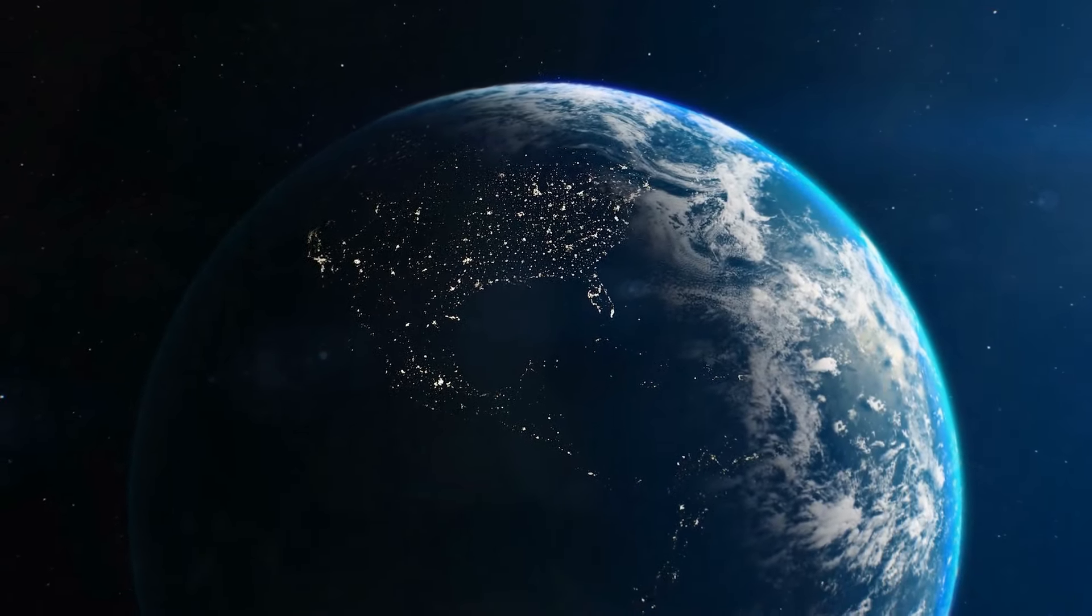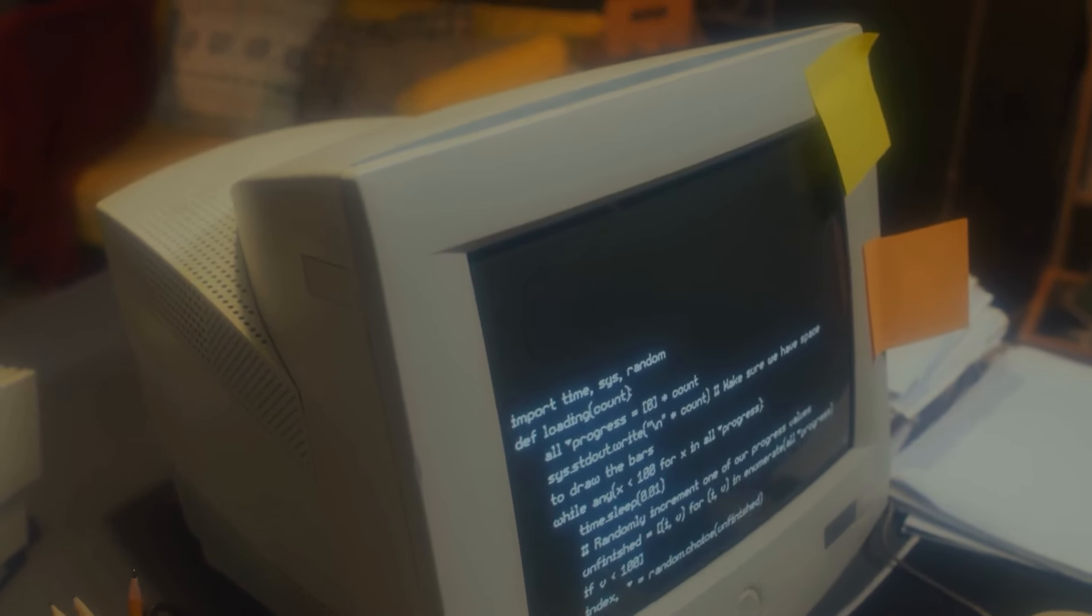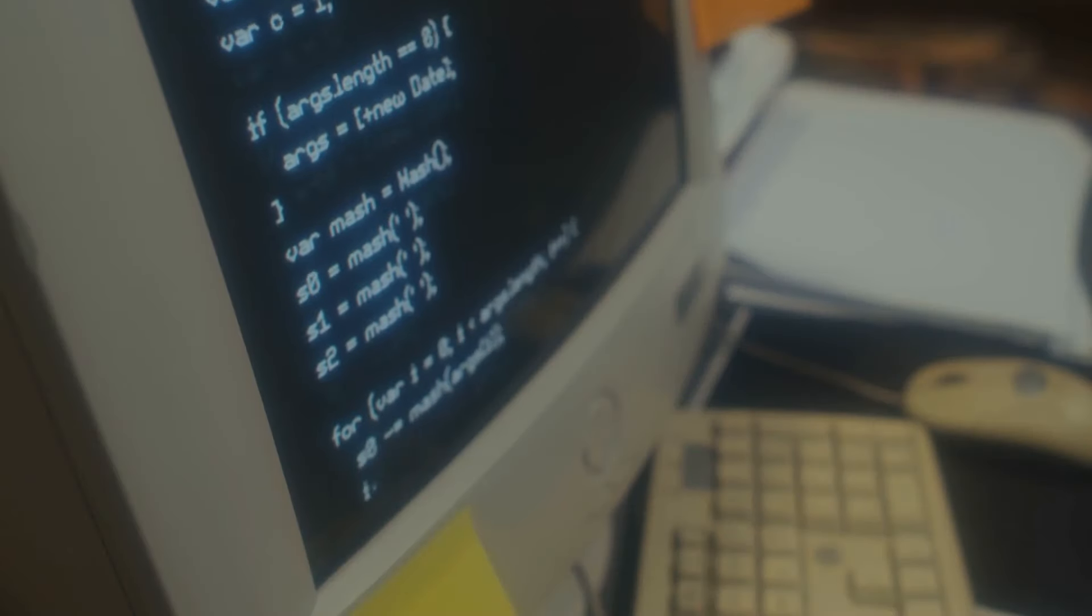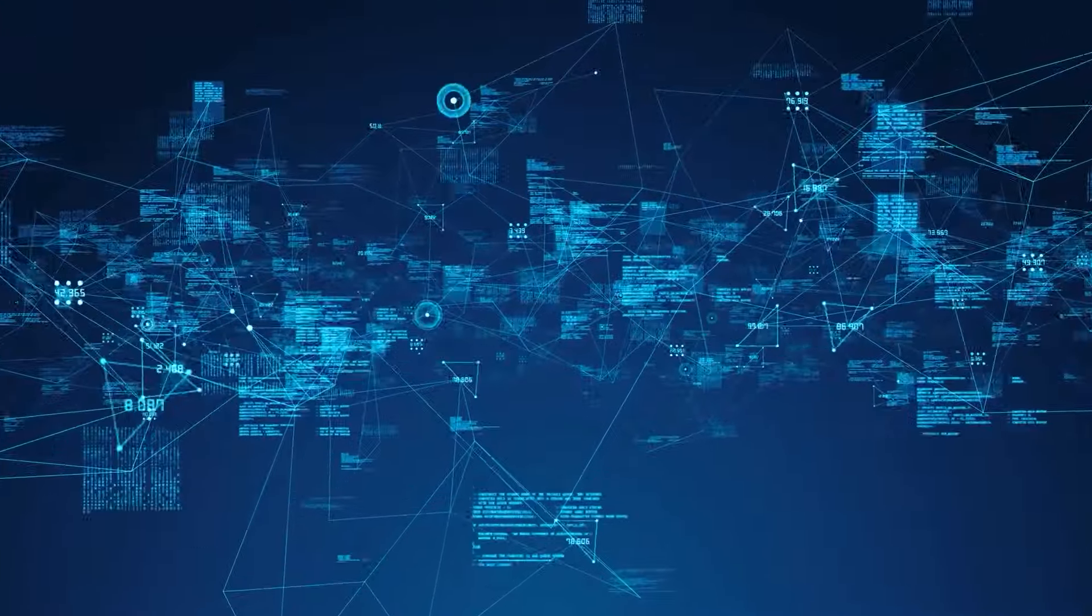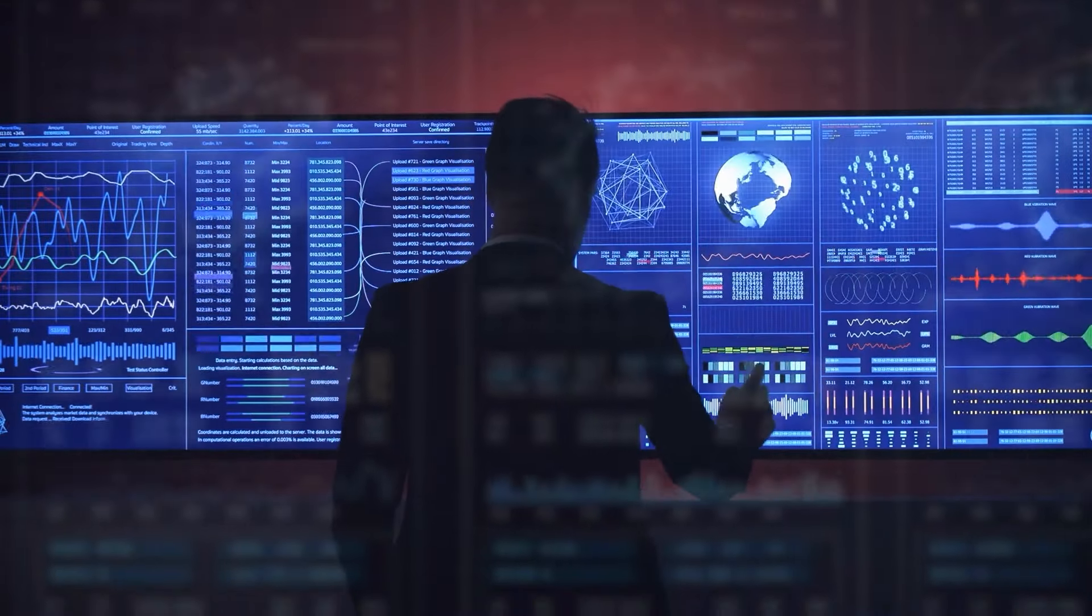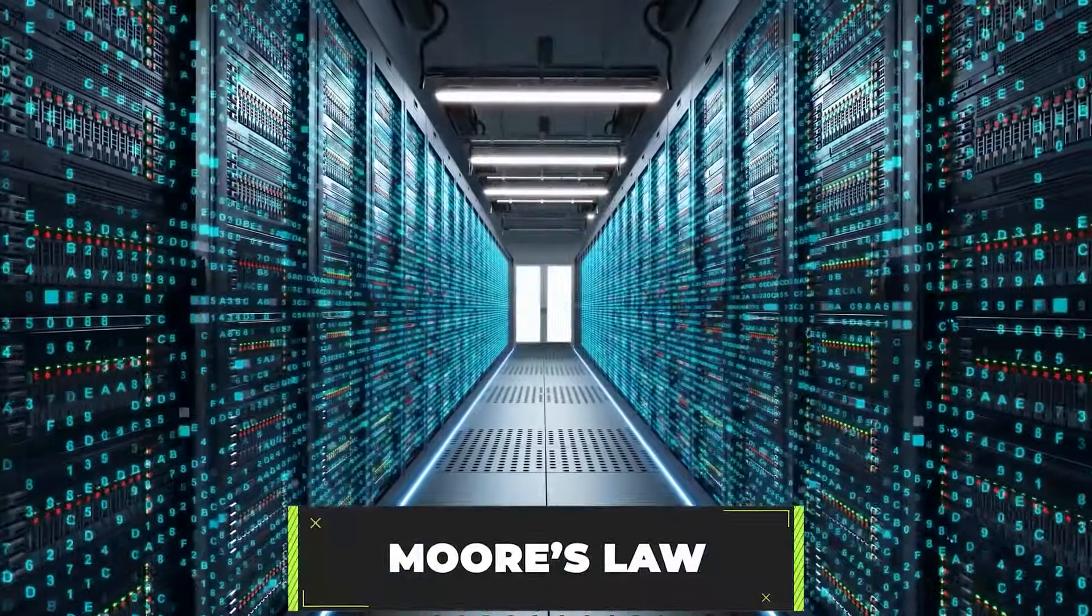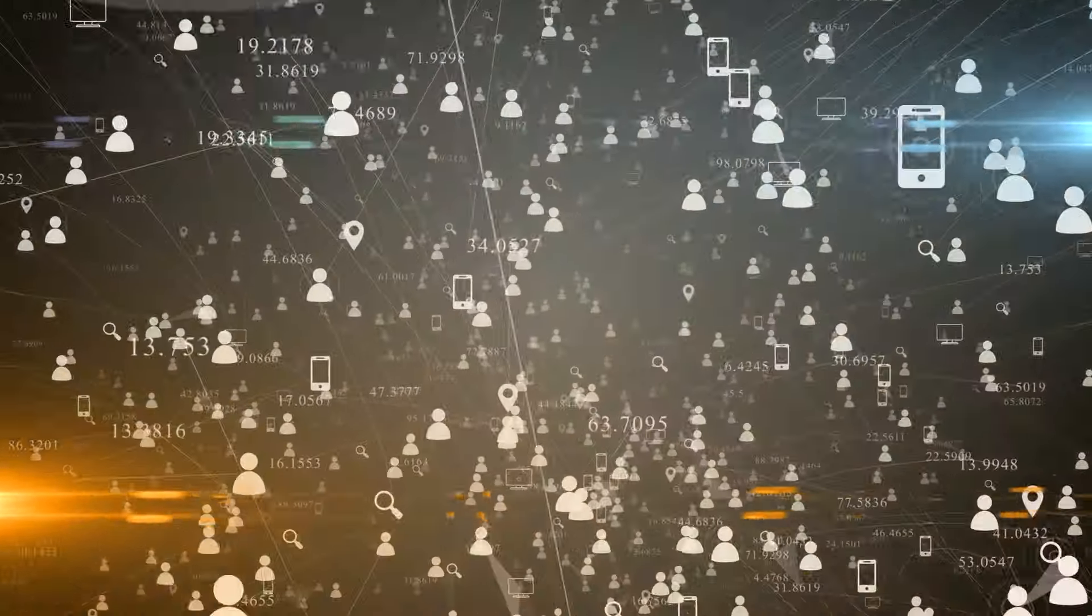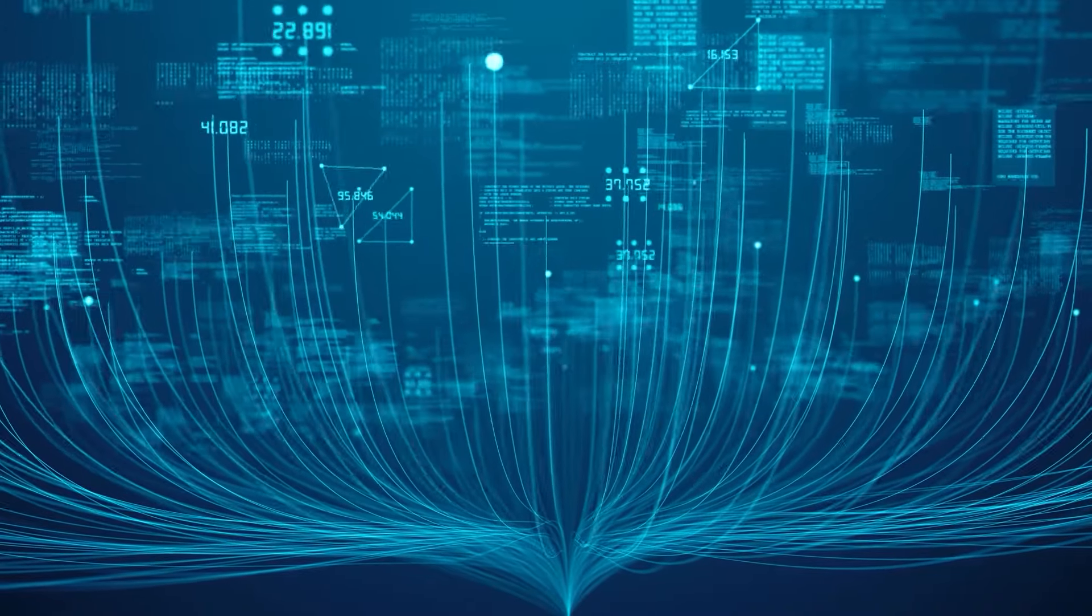The fourth epoch is defined by the invention of technology, particularly computers and information processing systems. The creation of mechanical calculators, early computers, and eventually digital technology revolutionized our ability to store, process, and analyze vast amounts of information. This epoch saw the birth of the digital age, where exponential growth in computing power as described by Moore's Law began to take hold.